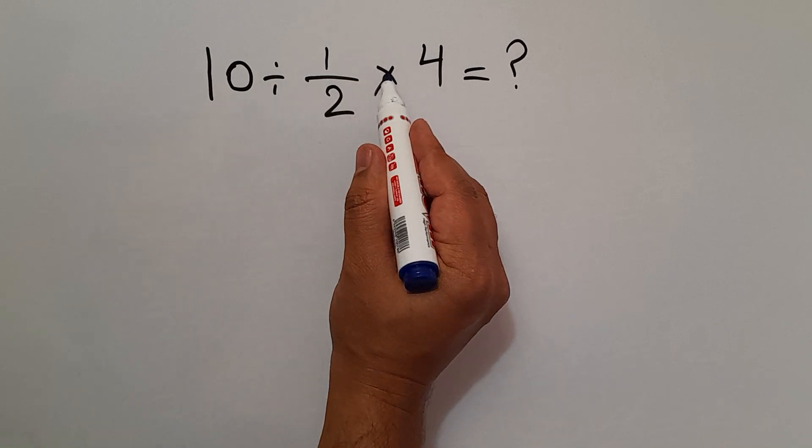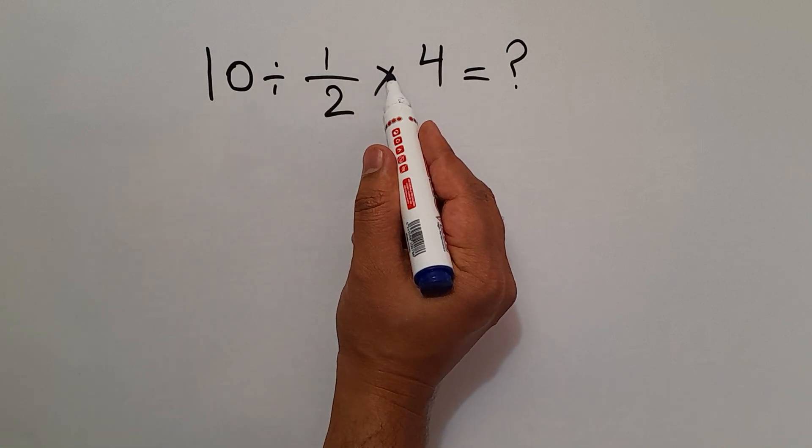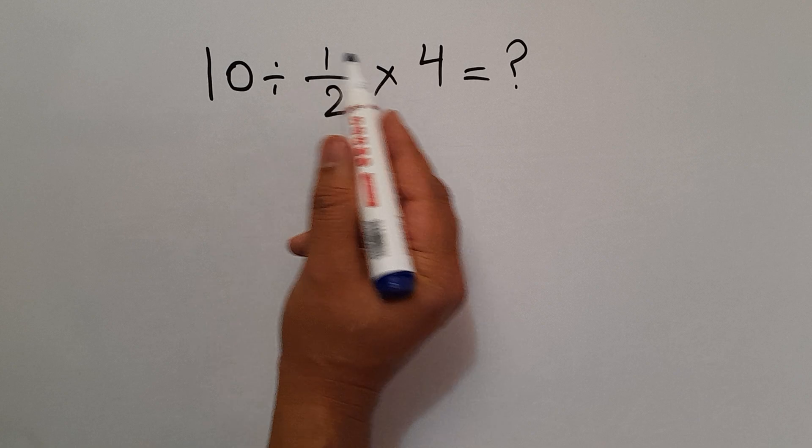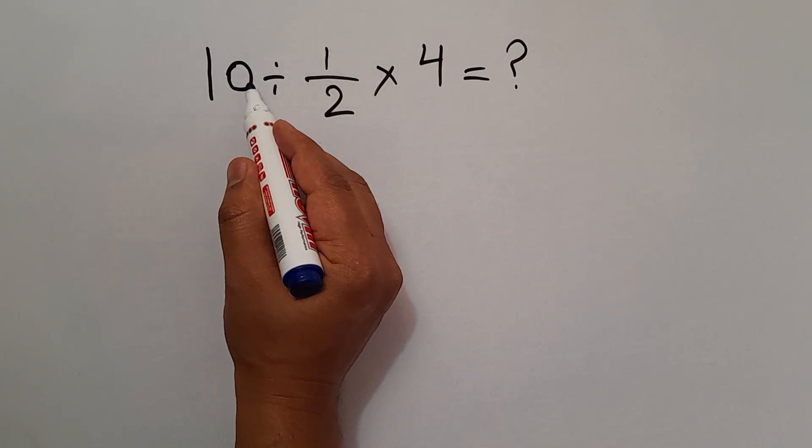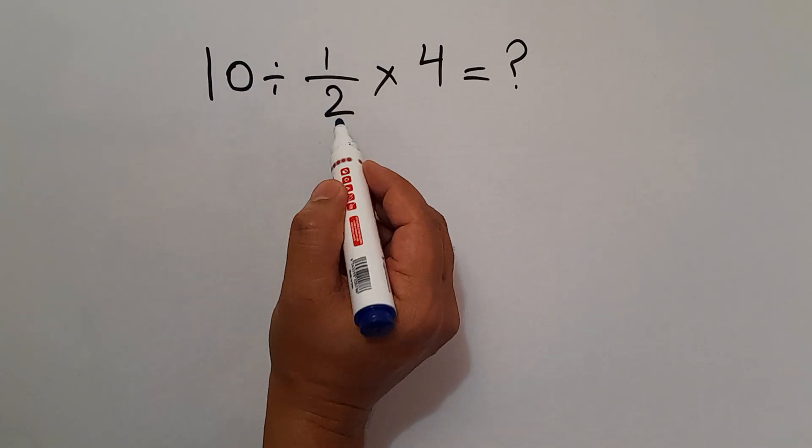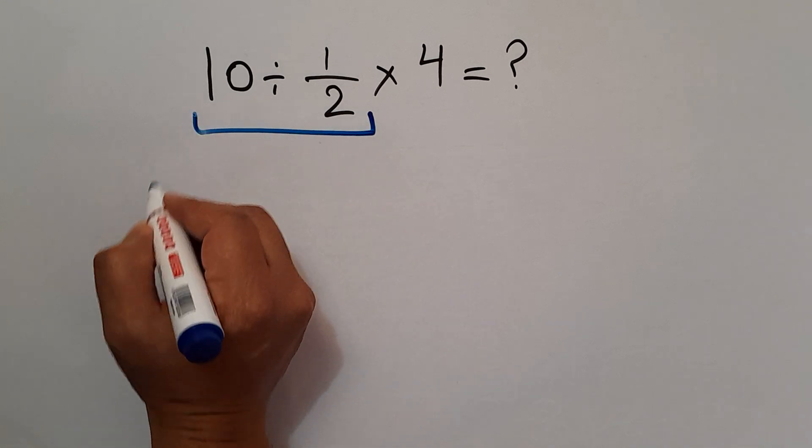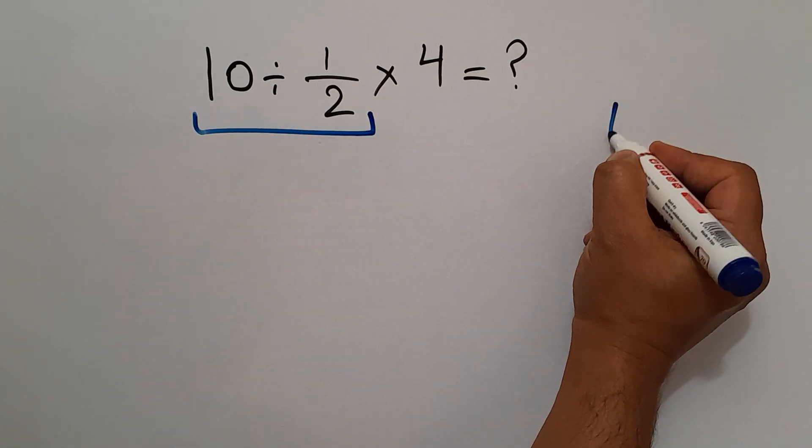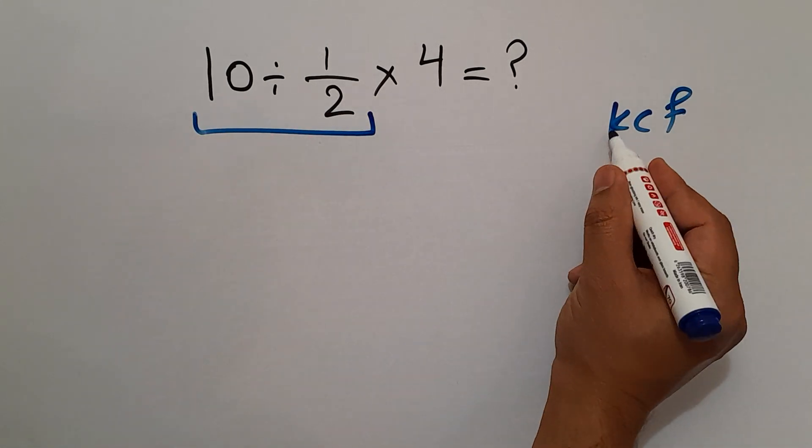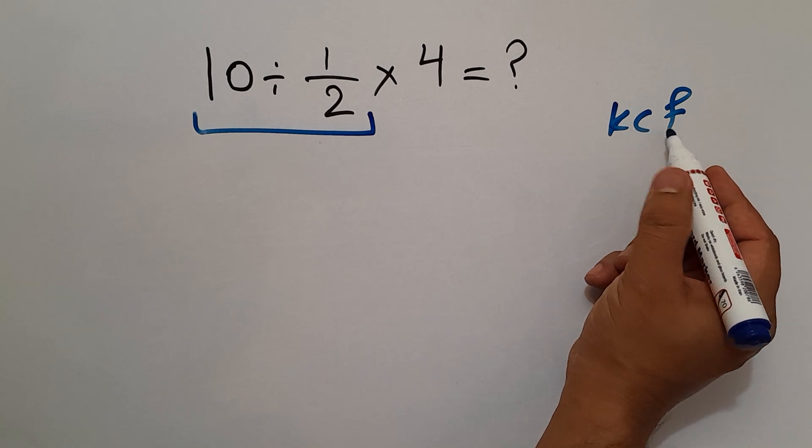As we know, division and multiplication have equal priority and we have to work from left to right. So first this division: 10 divided by 1 over 2. According to the KCF rule, K stands for keep, C stands for change, and F stands for flip.